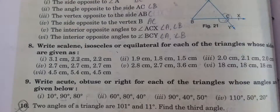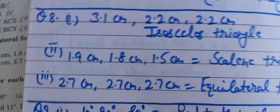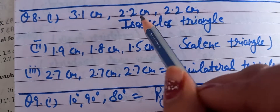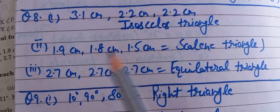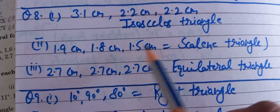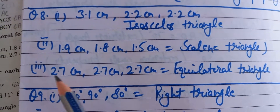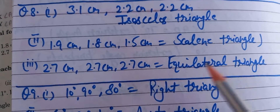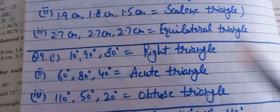Eighth question: sides are given and you have to identify the type of triangle. First part: out of three sides, two sides are the same — when two sides are equal, it is an isosceles triangle. Second part: all three sides are different — it is a scalene triangle. Third part: all three sides are the same — when three sides are equal, it is an equilateral triangle. Complete the remaining parts of Q8 in the same way.